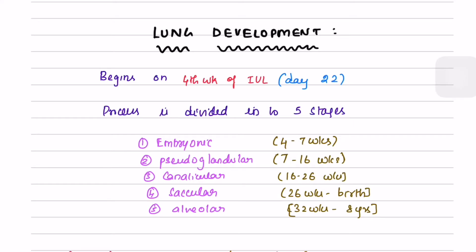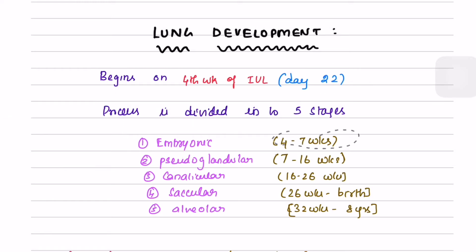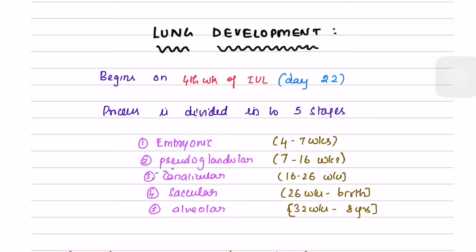Let's learn about lung development today. Lung development begins in the fourth week of intrauterine life, approximately on day 22. The process is divided into five stages: embryonic stage from four to seven weeks, pseudo-glandular stage from seven to sixteen weeks, canalicular stage from 16 to 26 weeks, and saccular stage from 26 weeks to birth.